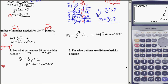I might just carry on and do the next one altogether. So for what pattern are 486 matches needed? So here I'm looking for p. And I know that m is equal to 486. So I'm going to show my substitution here. 486 equals 3 to the power of p that I don't know, times 2.